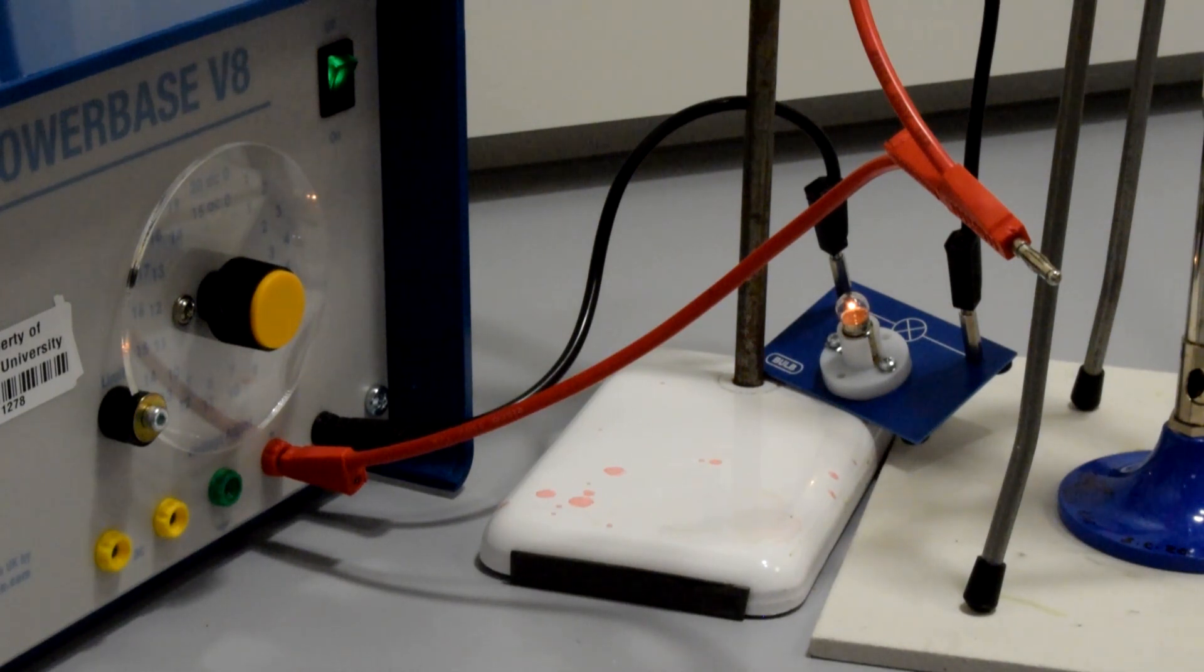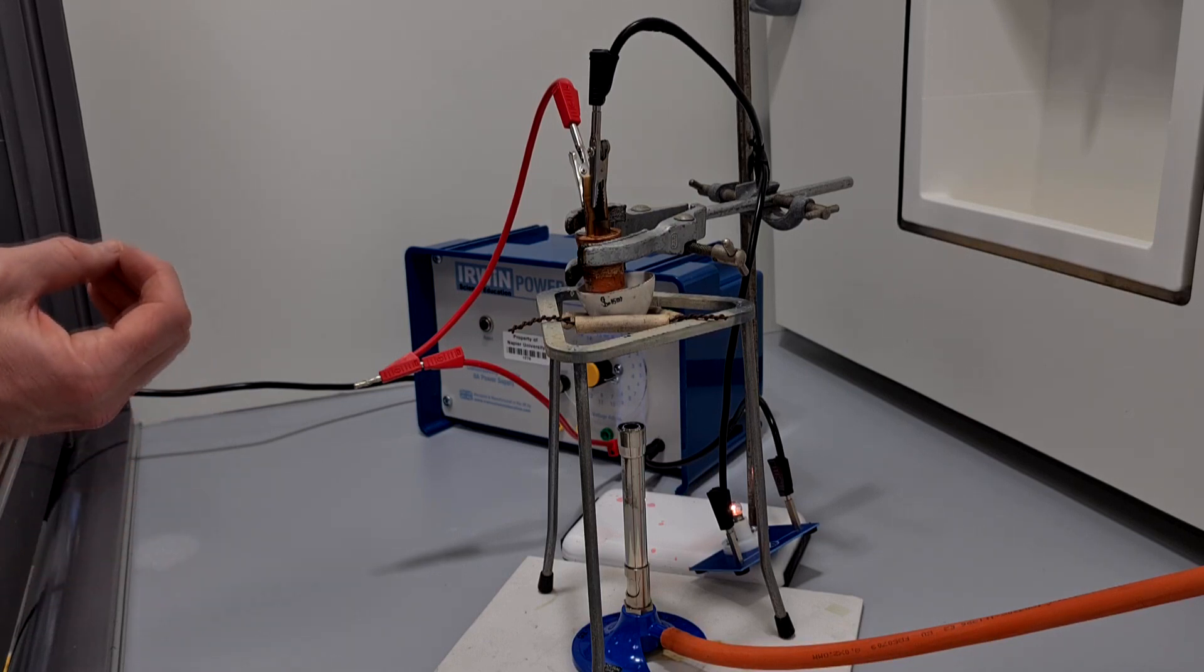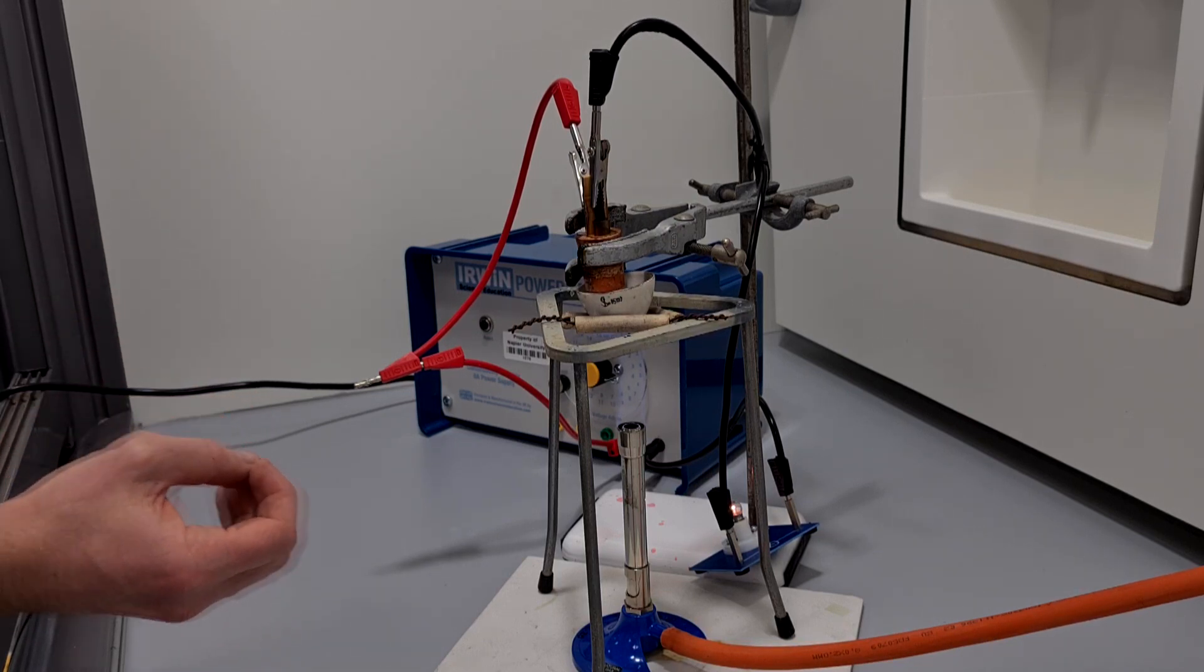And you can see now that the light bulb has lit up as that zinc chloride has turned from a solid into a liquid, showing me that the ionic melt does conduct electricity.